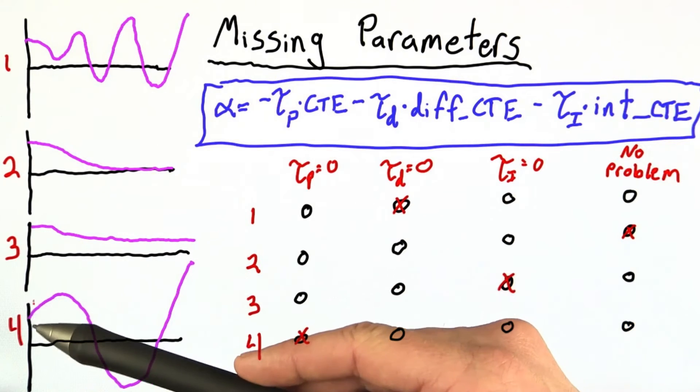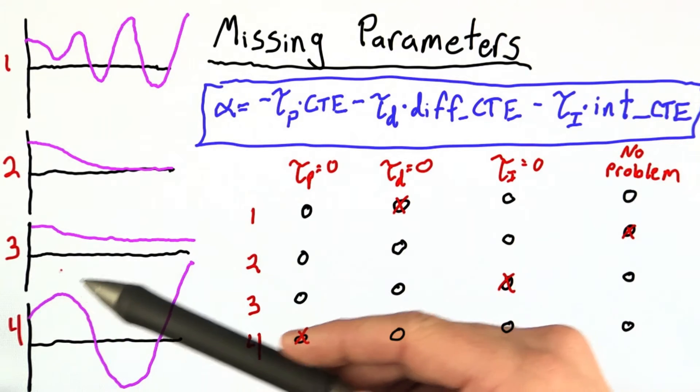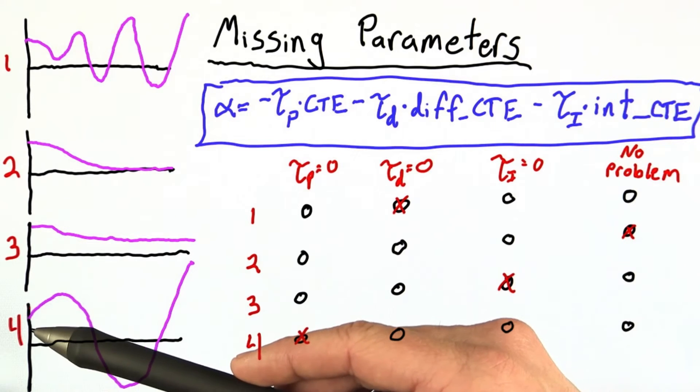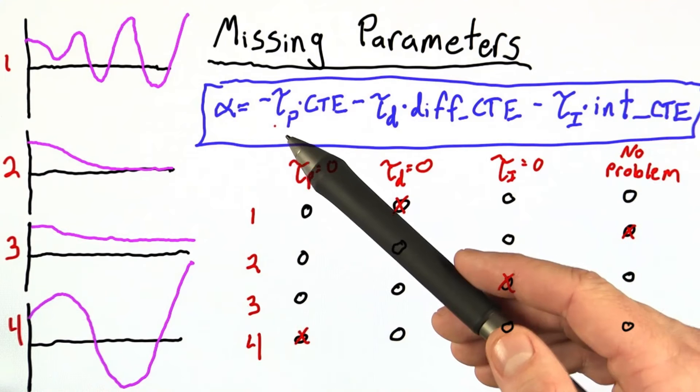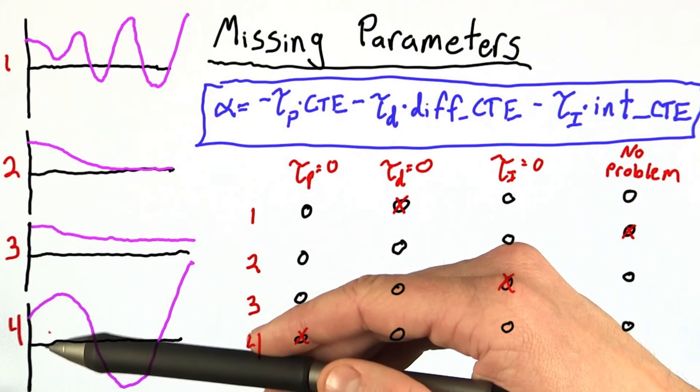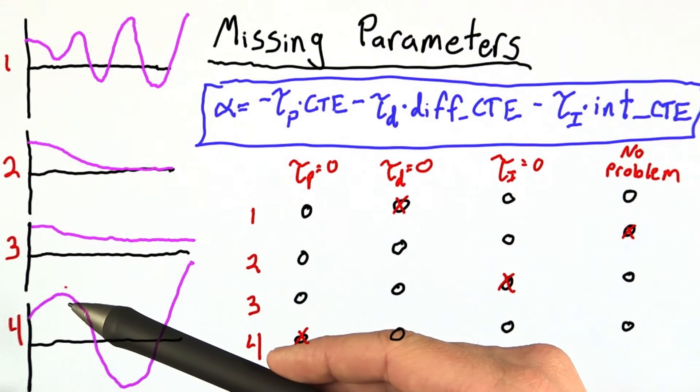The key to understanding number 4 was realizing that the robot starts by moving upwards. This is the only case where the robot started going up, and what's happening here is the drift is dominating. Since tau p is equal to 0, there's no initial term that steers the robot towards the goal, and without that, the drift is going to take over.